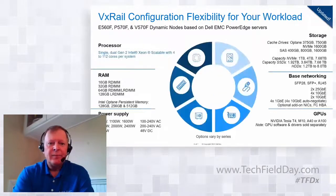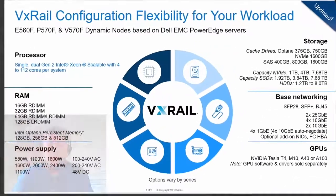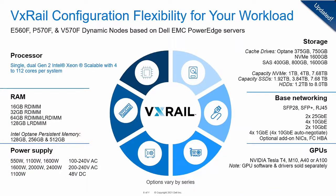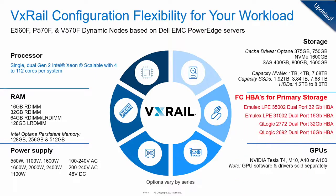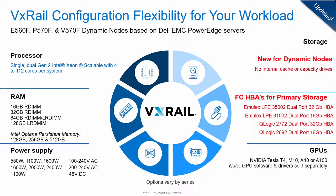So what's changing? The dynamic nodes will be focused on the E560F, the P570F, and the V570F. You can have various processor options, memory options, power supplies, GPUs, and networking interfaces. But what's changing is we're elevating the role for the fiber channel HBAs to support primary storage with these nodes. The HBAs offered are 16 and 32 gig Emulex and QLogic HBAs. And the most significant change: when you look at your storage drives, there are none — no internal cache or capacity drives in the dynamic nodes. The storage is coming from an external storage source, functioning as primary storage.